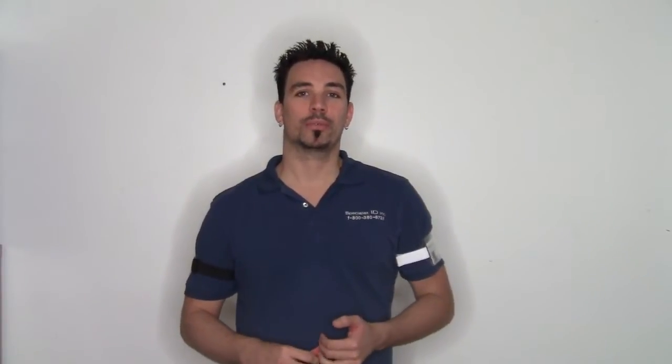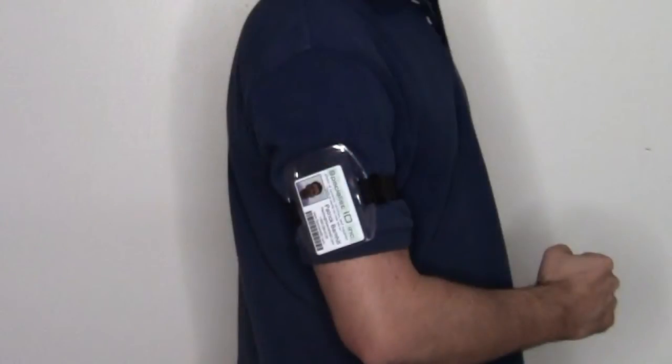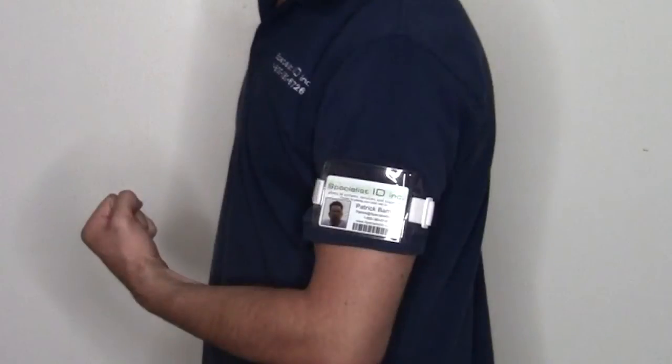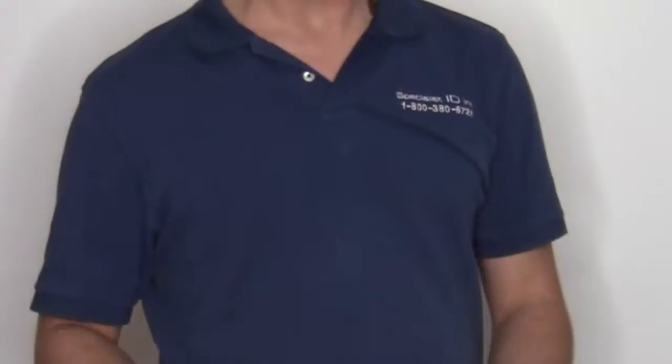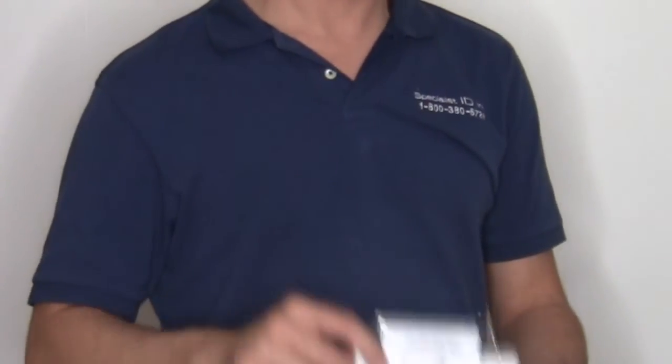Because of its popularity, I get a lot of questions about it, so I wanted to answer those. First of all, our armband ID badge holder is available in both vertical and horizontal formats. It's also available with either a black, white, or blue armband.